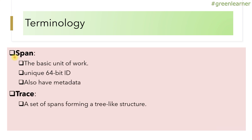What is a span? A span is the basic unit of work. It has a 64-bit ID and it also has metadata to give information about other things like timing and other details. A trace is a set of spans forming a tree-like structure, so a trace is going to have different spans: S1, S2, S3.